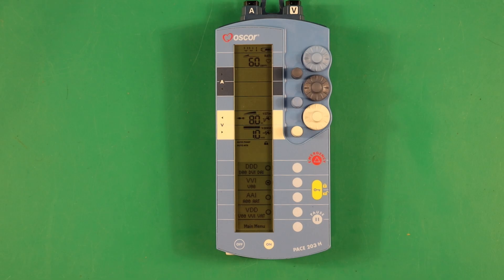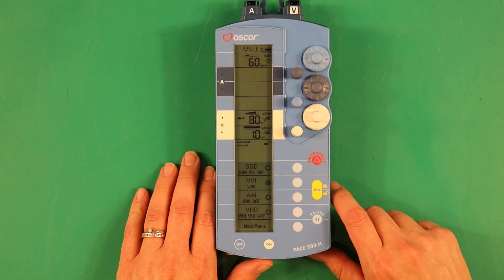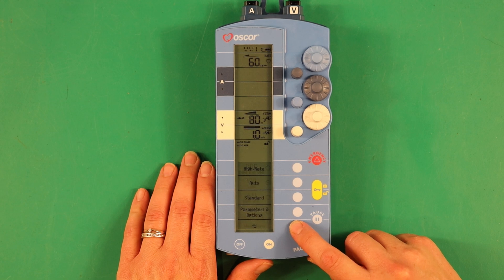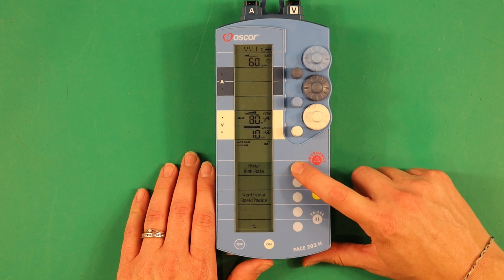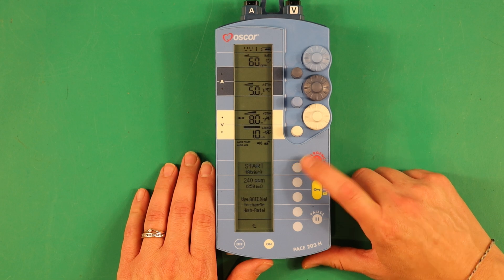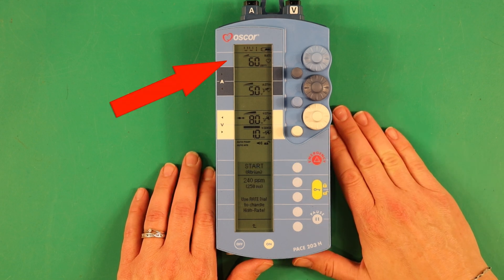The steps to pace are going to depend on your pacer box, but for this system, hit unlock, main menu, then high rate. Notice it doesn't matter what mode the box is set to. This pacer was VVI, but now the atrial stimulation is lit up.